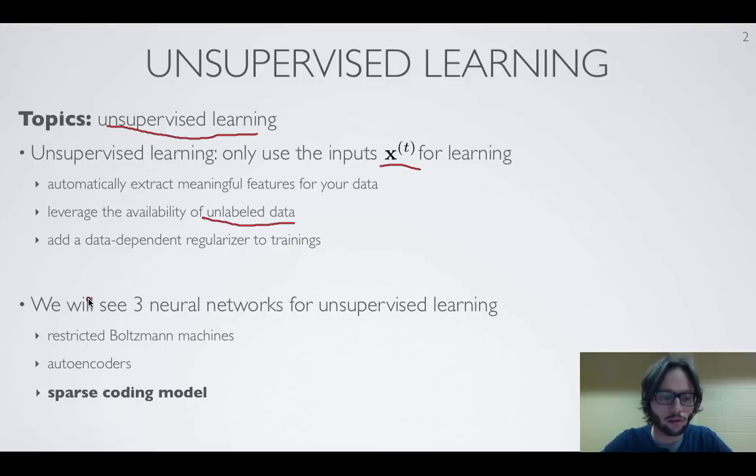We've seen before other neural networks for unsupervised learning. We've seen a restricted Boltzmann machine and also autoencoder in the previous videos. And so now we'll look at another unsupervised neural network which is known as the sparse coding model.